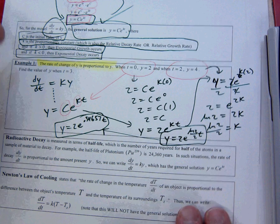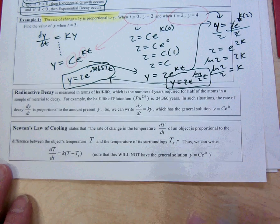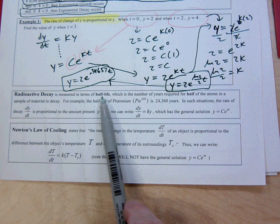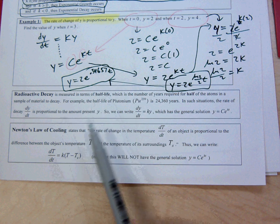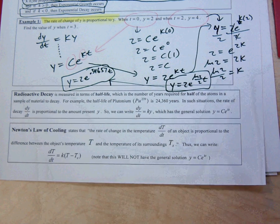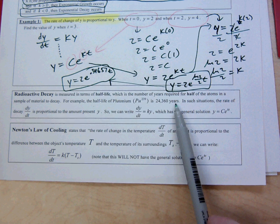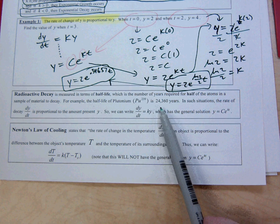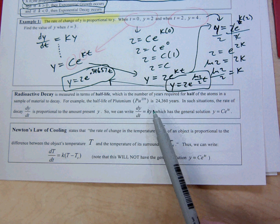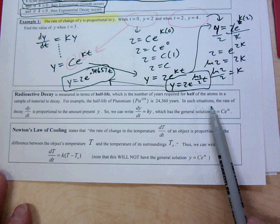Now let's look at radioactive decay, which you may have seen in science class. A half-life is the number of years it takes for half the atoms in a sample to decay. For example, the half-life of plutonium is 24,360 years — meaning any starting quantity will naturally decay to half that amount in that time.